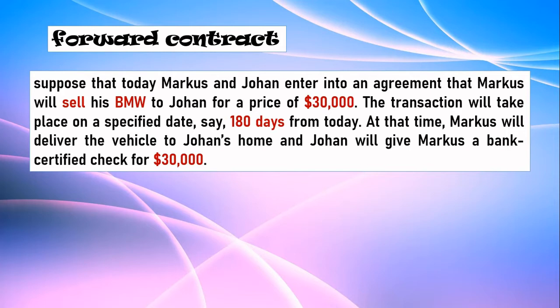This is how a forward contract is made. Suppose that today Marcus and Johan enter into an agreement that Marcus will sell his BMW to Johan for a price of $30,000. The transaction will take place on a specified day — say 180 days from today. At that time Marcus will deliver the vehicle to Johan's home and Johan will give Marcus a bank-certified check for $30,000.